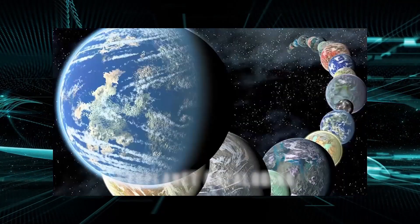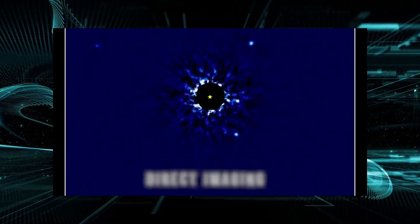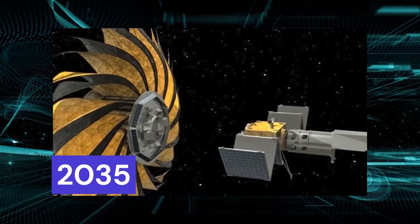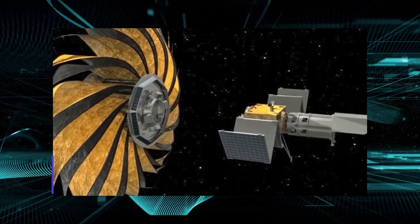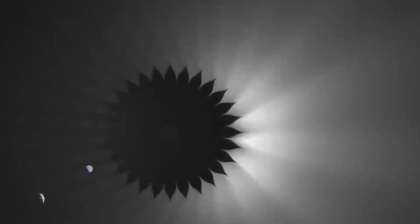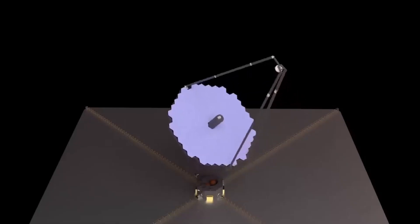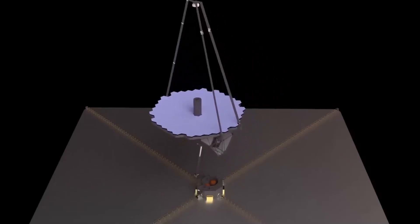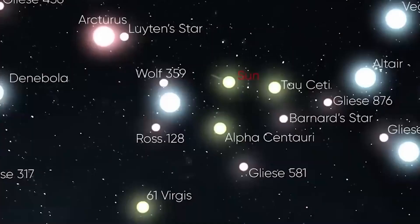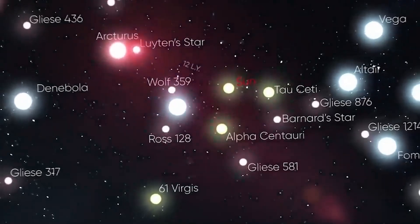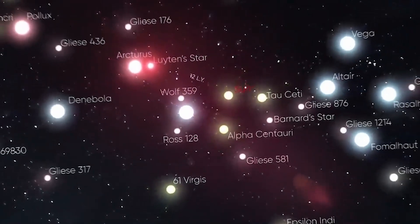Exoplanet cataloging and direct imaging missions by LUVOIR and HabEx are both set to launch in 2035. There is still more work to be done before that. In fact, Beattie employed computerized replicas of the LUVOIR and HabEx observatories on several star systems that contained both potential Earth-like planets circling G, K, and M-class stars as well as known planets like Proxima b.